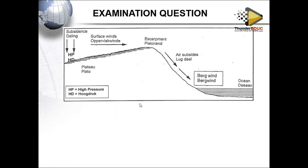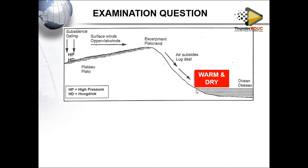Now let's look at some exam questions. In the diagram we can see a mountain — that's why we call them berg winds. We have the escarpment with subsidizing high pressure in the interior, and surface winds occurring. There is high pressure in the interior and low pressure at the coast, so winds move from high to low pressure, getting heated adiabatically as they descend the escarpment.